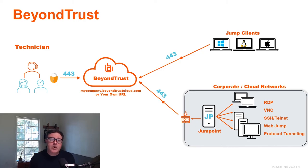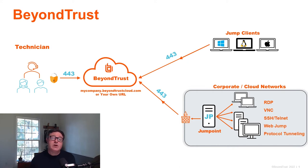We'll pull up an architecture diagram for the BeyondTrust Privileged Remote Access solution. We'll start on the left-hand side of the diagram and work our way right. On the left-hand side, you see a technician — this is a technician that can be anywhere in the world. They can leverage the BeyondTrust Privileged Remote Access console, either a thick client or a web-based client, to connect outbound over port 443 to the BeyondTrust appliance environment.